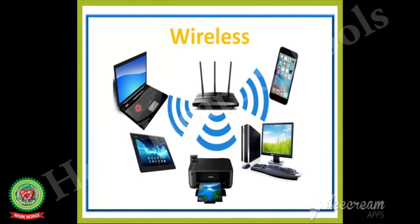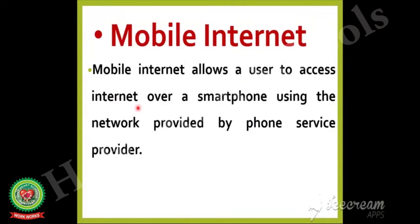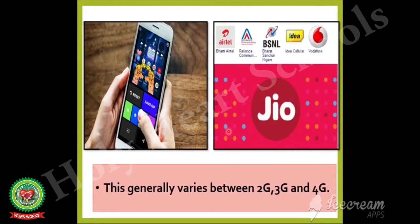The next one is mobile internet. Mobile internet allows a user to use the internet over a smartphone using the network provided by the mobile phone service provider. The speed generally varies between 2G, 3G, and 4G.